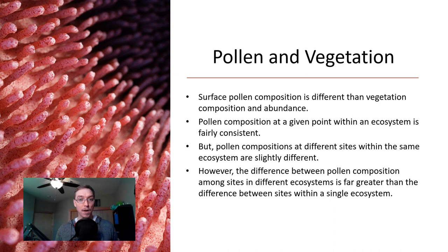Surface pollen composition is different than vegetation composition and abundance. Pollen composition at a given point within an ecosystem is pretty consistent, but pollen composition at different sites within the same ecosystem are slightly different. The difference between pollen composition among sites in different ecosystems is far greater than the difference between sites within a single ecosystem. Think of our first law of geography: things that are nearer are more alike than things that are farther apart. As you extend out from that epicenter and you get into another ecosystem it's going to be a vastly different pollen composition.